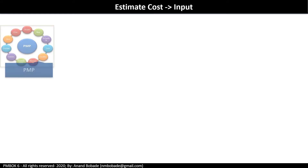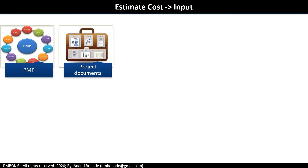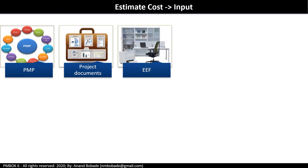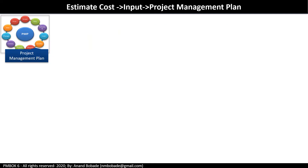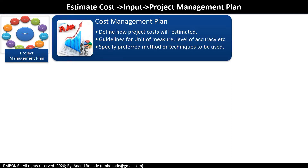Inputs include the project management plan, project documents, enterprise environmental factors, and organizational process assets. The key input from the project management plan is the cost management plan, which defines how project costs will be estimated. It provides specific guidelines affecting this process — for example, guidelines about unit of measure, level of precision, and level of accuracy — and specifies preferred methods or techniques to be used in estimation.